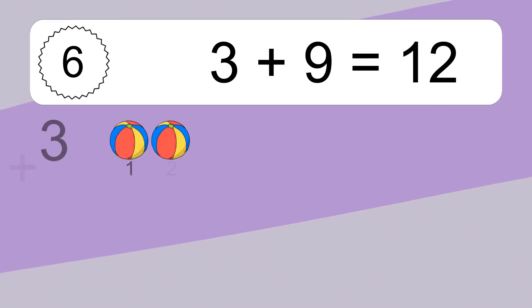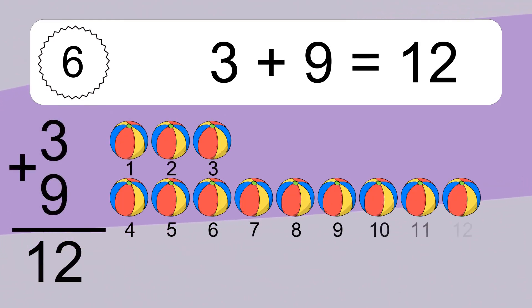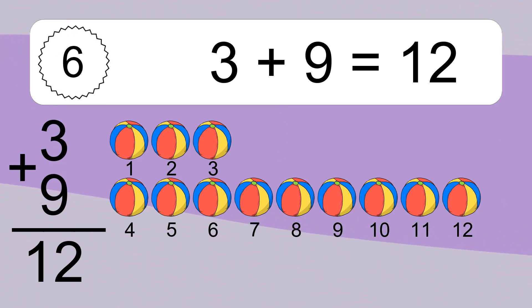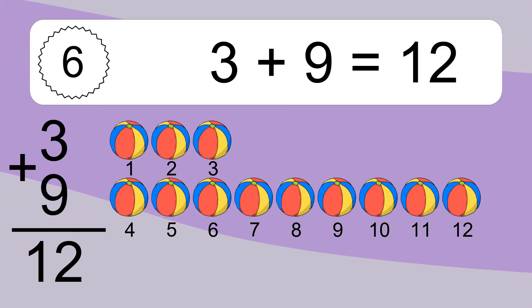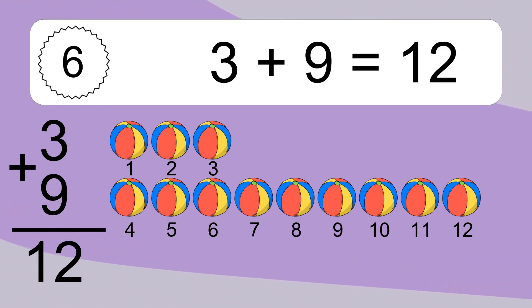3 plus 9 equals 12. Let's count it. 1, 2, 3, 4, 5, 6, 7, 8, 9, 10, 11, 12.